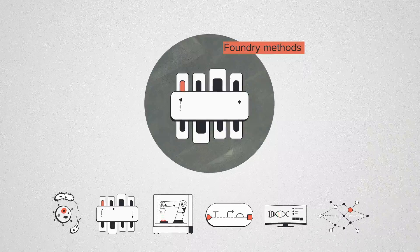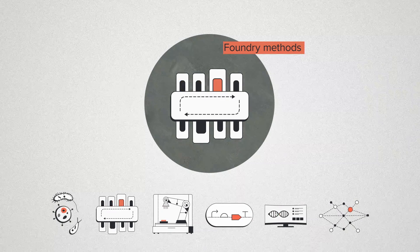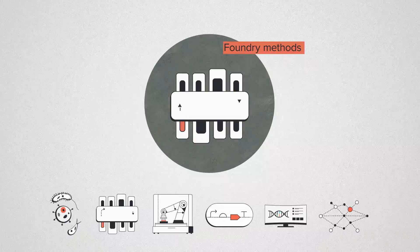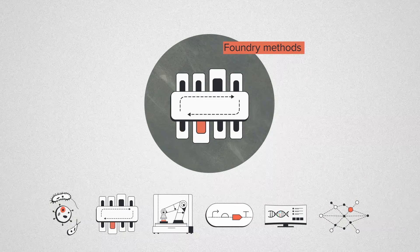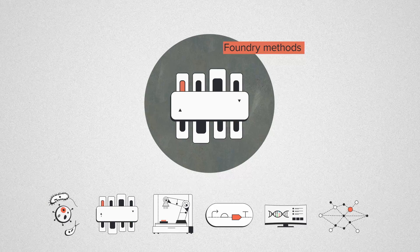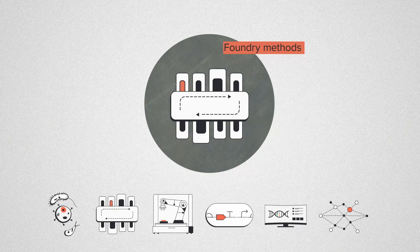Foundry methods include protocols, assays, and everything you need to know to work with biology effectively at scale. How do we grow these cells? How do we get DNA into them or edit their genomes? When methods are reusable, they can be iteratively improved and refined. The more methods that we onboard, the better visibility we have on the right approach for a given problem.